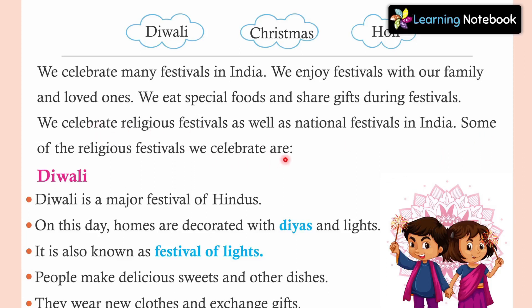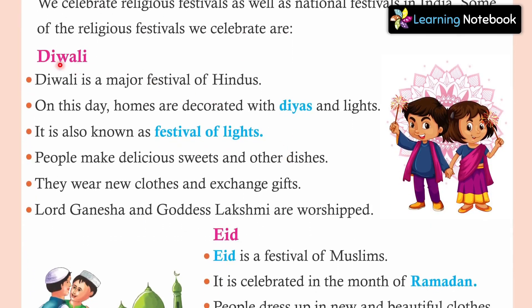Some of the religious festivals we celebrate — let's start with Diwali. Diwali is a major festival of Hindus. Diwali ka festival Hindu religion ka major festival hai. On this day, homes are decorated with diyas and lights — hum apne gharao ko decorate karte hai diya jala kar aur light laga kar. This festival is also known as the Festival of Light, kyunki sari jaga roshni hi roshni hoti hai, toh Diwali ko Festival of Lights bhi kaha jata hai.